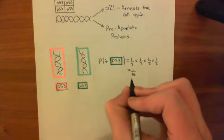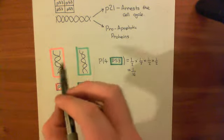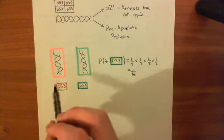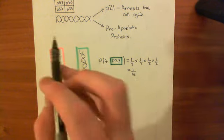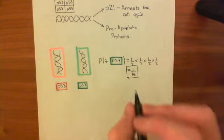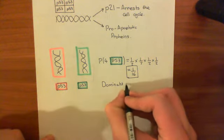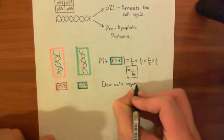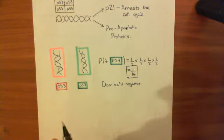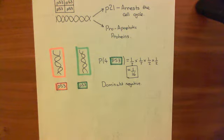Even though half of the P53 is working and half is not, the actual function of P53 as a transcription factor is reduced down to a sixteenth. That mechanism is known as dominant negative — even though only one of the genes has a mutation, the bad P53 is capable of inhibiting the good P53. So the loss of function of P53 is much greater than just a half.